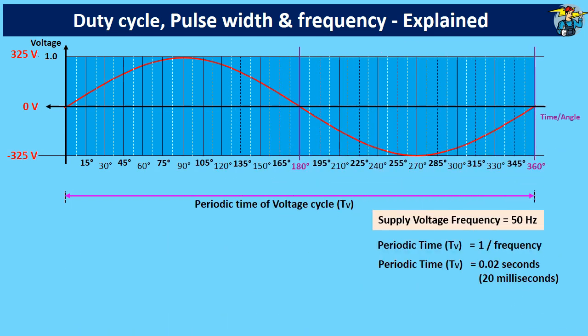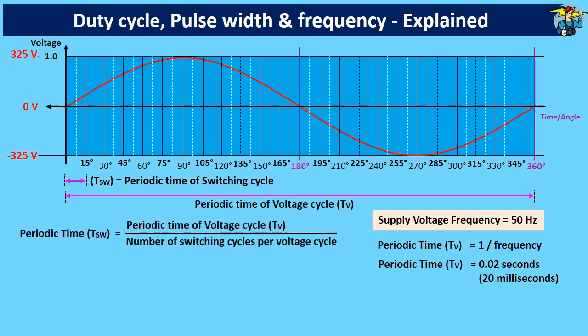Here in this graph, periodic time of voltage cycle is divided into 24 switching cycles to enable smoother curve generation using digital signals. So the periodic time of switching cycle is given by periodic time of voltage cycle divided by number of switching cycles during one voltage cycle.